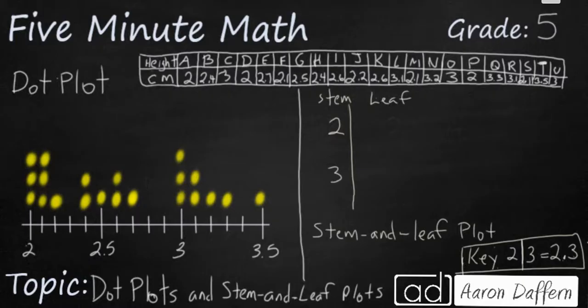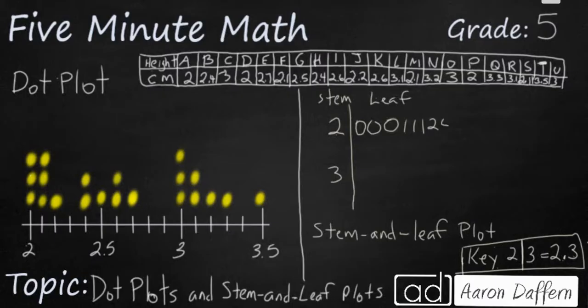So we can take our data. We have three 2.0's, or simply two. To represent them we're going to put three zeros in the leaf because that makes 2.0 or 2. We also have three 2.1's — you notice I'm putting them in order. So rather than writing 2.0, 2.0, 2.0, I'm writing the 2 in the stem and then all of the decimals in the leaf. I have a 2.2, two 2.4's, one 2.5, two 2.6's, and a 2.7. That's it for my 2 stem because there's no 2.8 or 2.9.